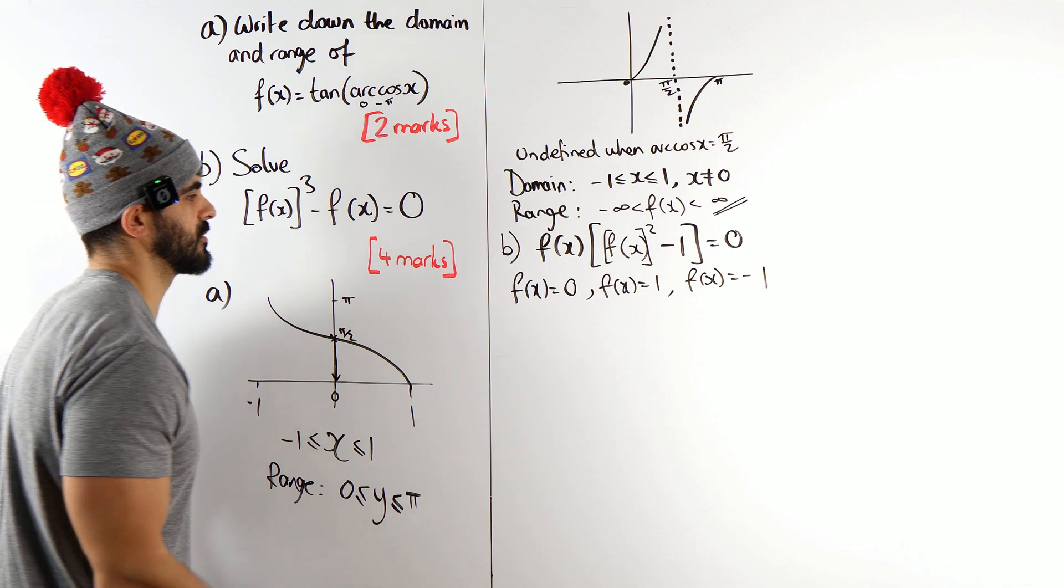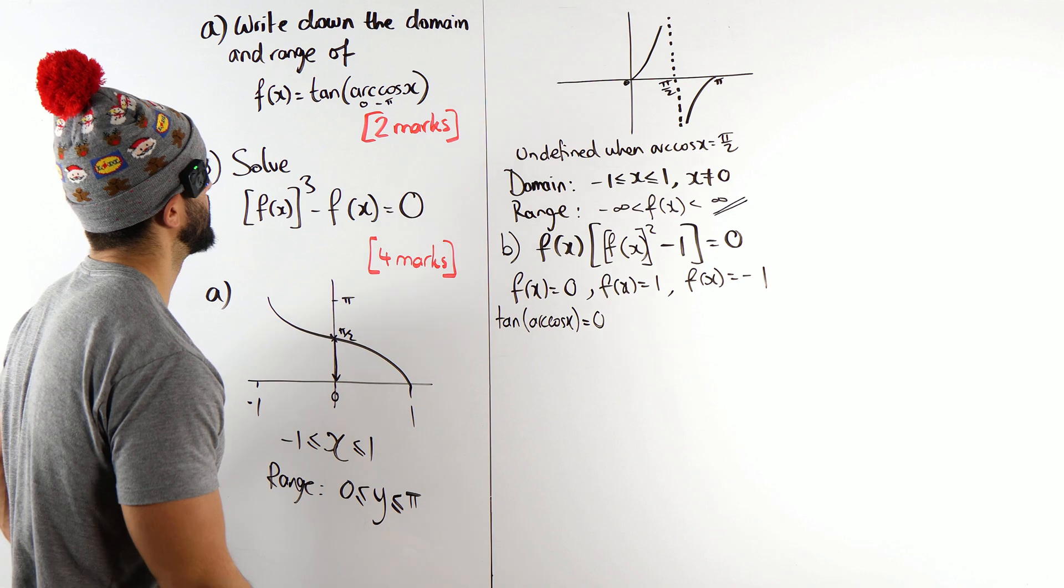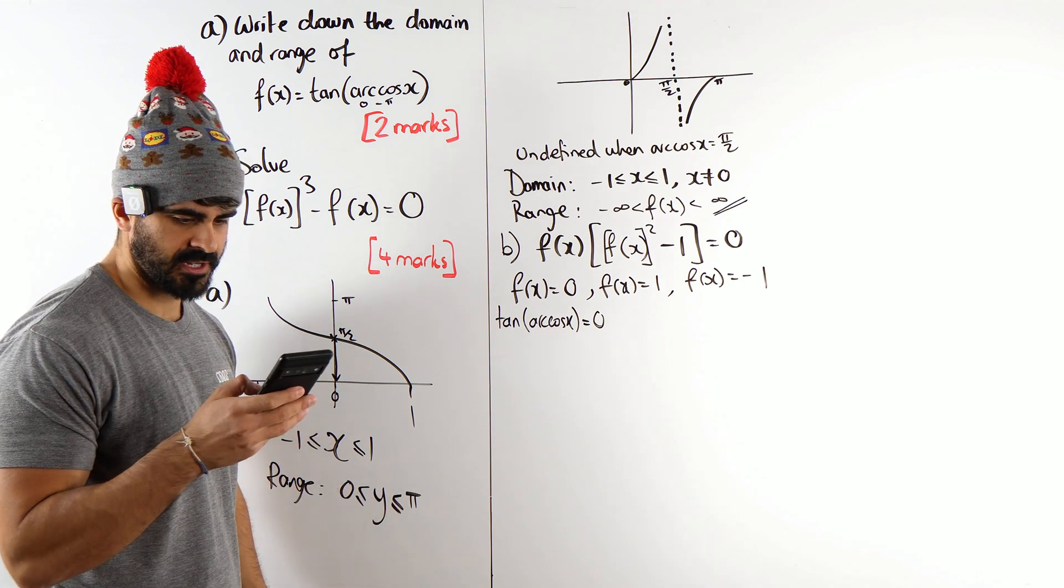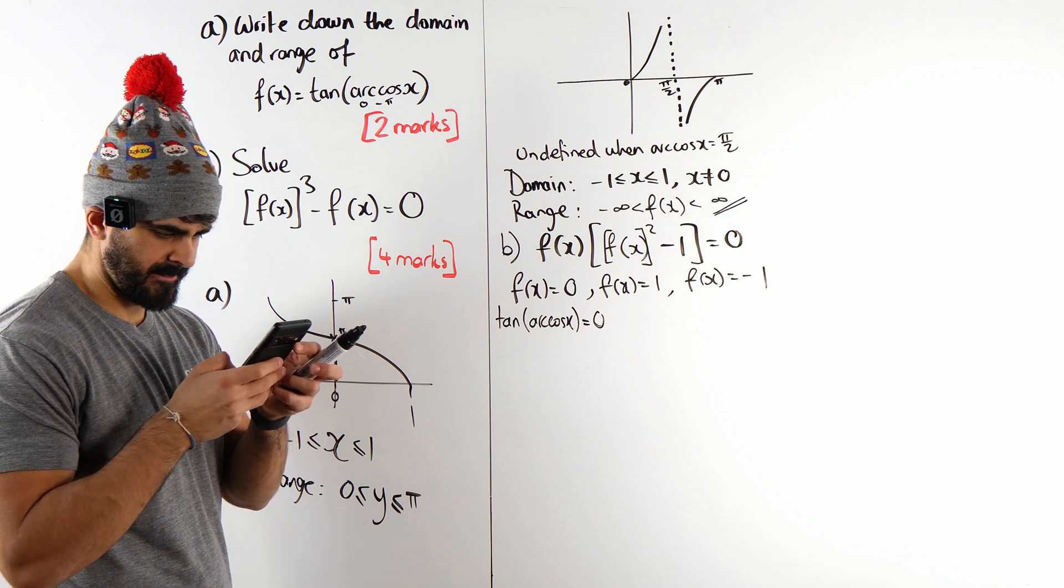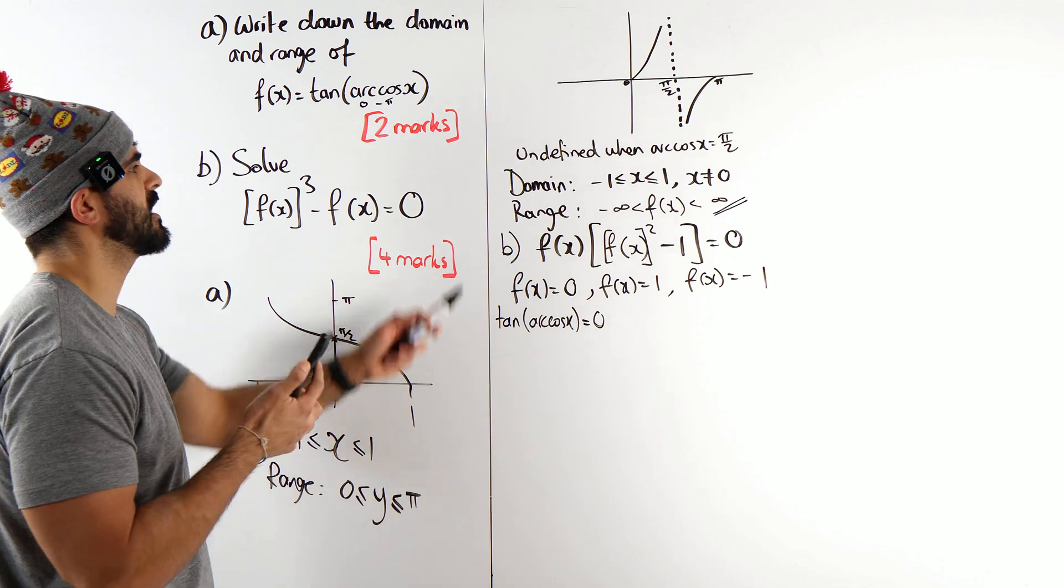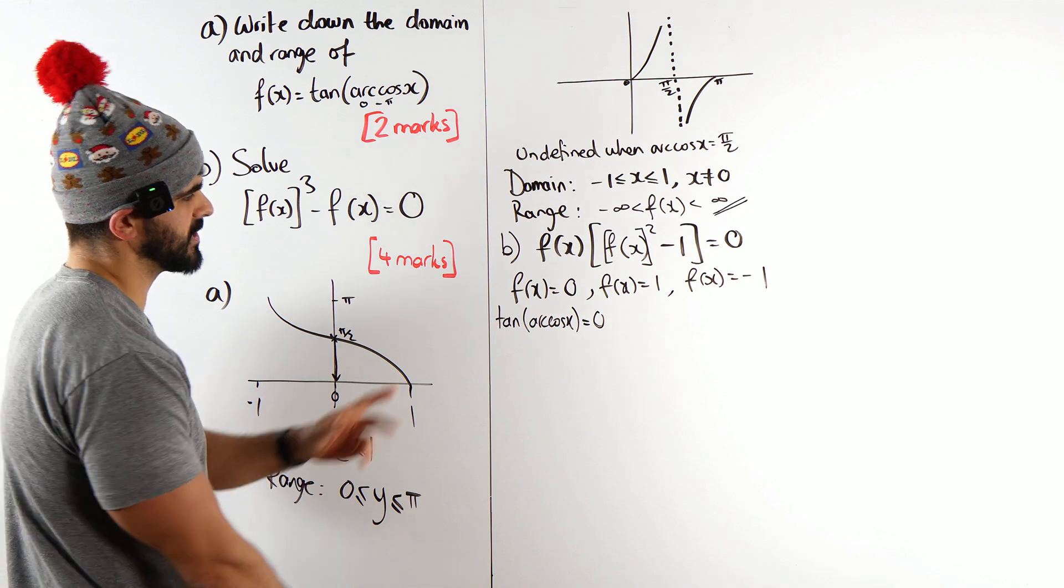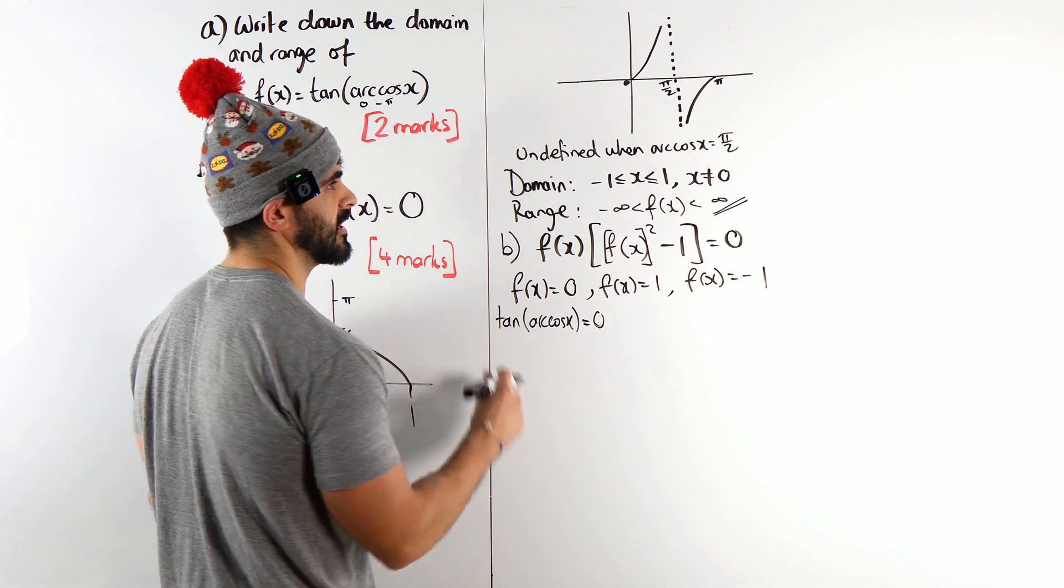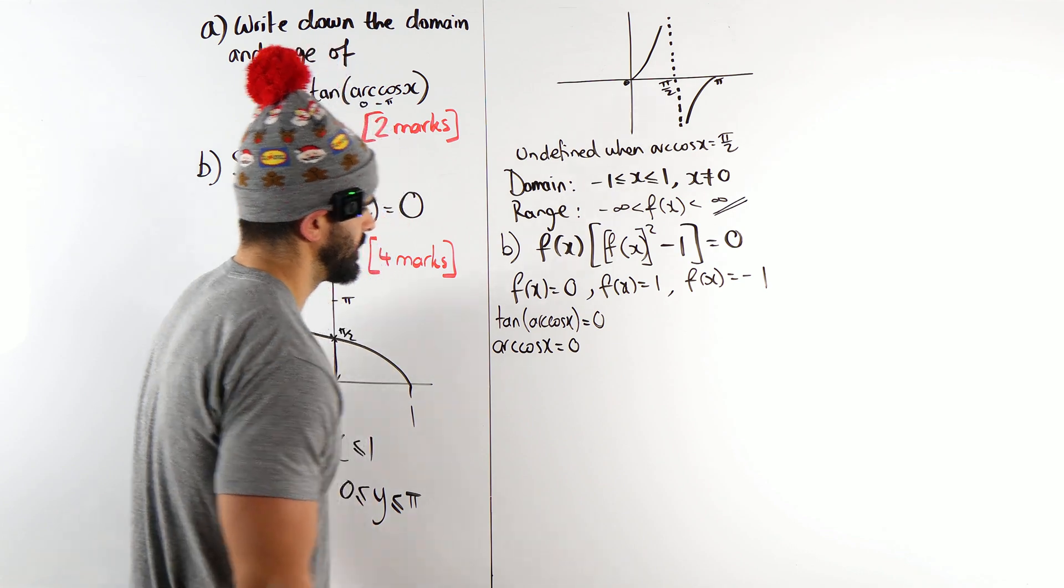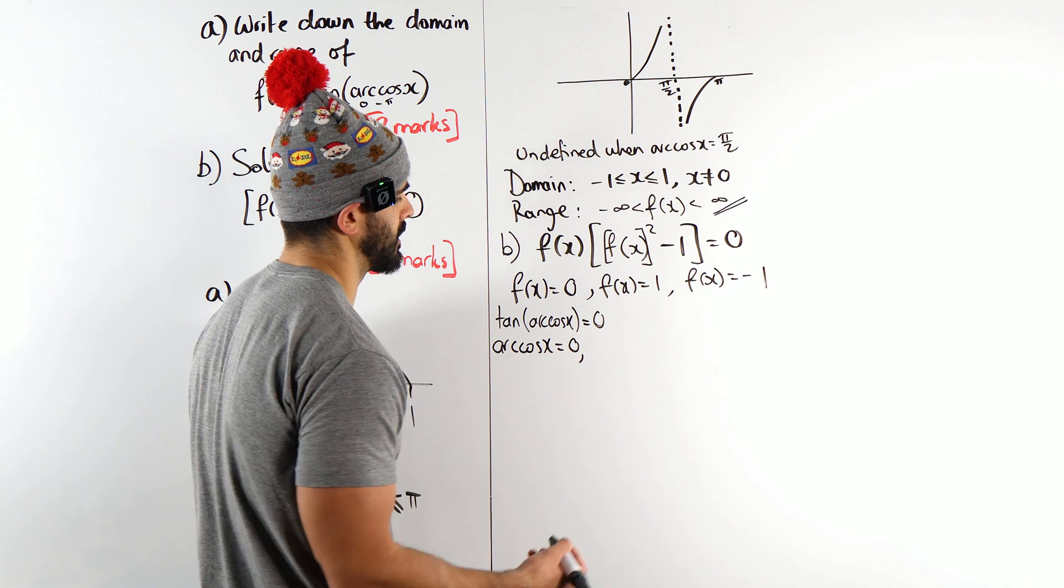And now we can sub in things. So we have tan of arccos(x) is zero. So tan arccos is zero. I don't know if I wrote this down. I didn't because I'm a donut. The range. Let me double check the question. The range is between... Oh, I just cropped it up. Wait, what? Oh wait, no. I'm bugging. The range. I've given the range. Anyway, ignore me. So we're going to do inverse tan of zero.